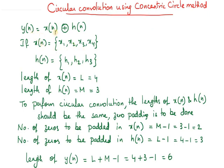Here, y(n) is equal to the circular convolution of x(n) and h(n). Now, if x(n) has samples x1, x2, x3 and x4, and if h(n) has samples h1, h2 and h3, then the length of x(n) is 4 and the length of h(n) is 3.